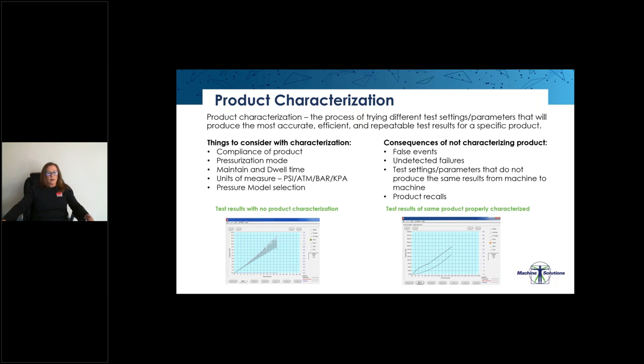Things to consider with characterization include the compliance of the product. Is it a rigid product or is it a compliant product? What pressurization mode do we want to use? I've mentioned today several different modes. Leak, burst, and fatigue testing typically use different pressurization modes. We want to select a correct maintain and dwell time. What are our units of measure? The HBLT allows us to select PSI, atmospheres, bars, and kilopascals. And then what model pressure tester do we want to use?